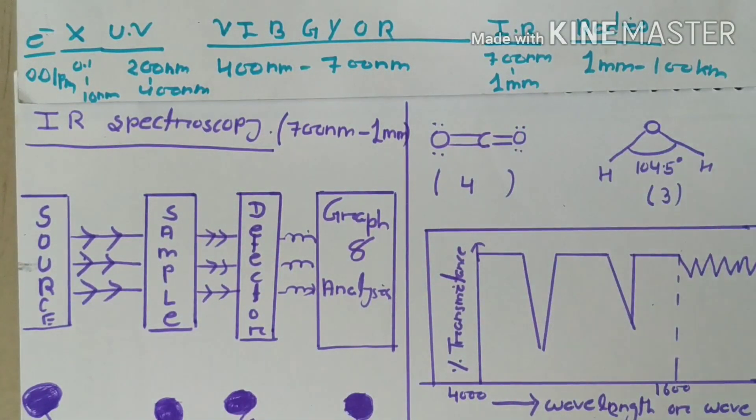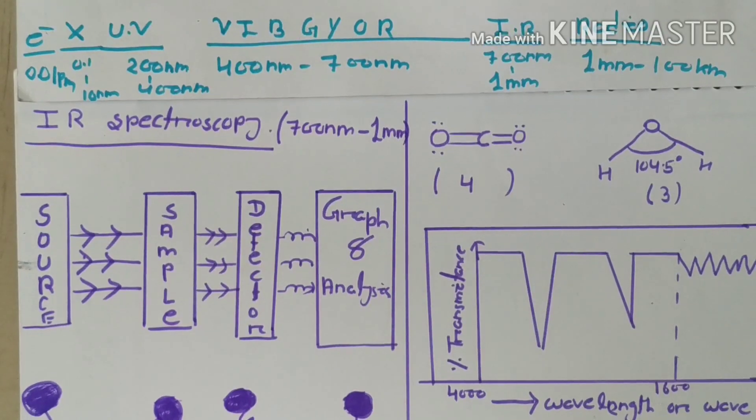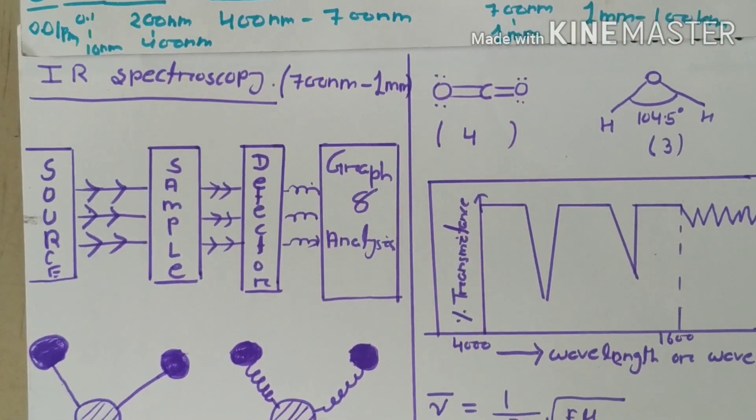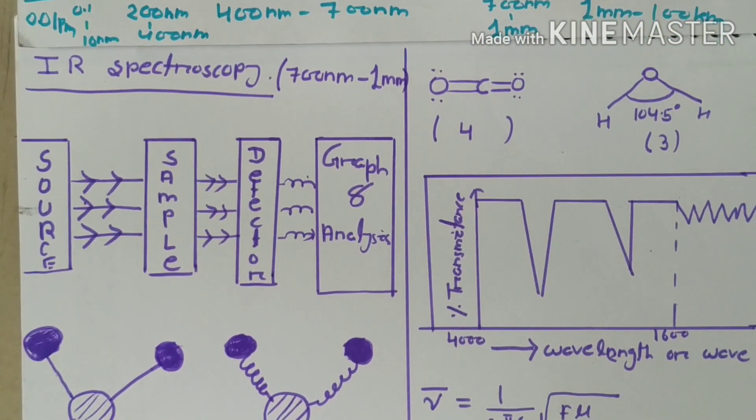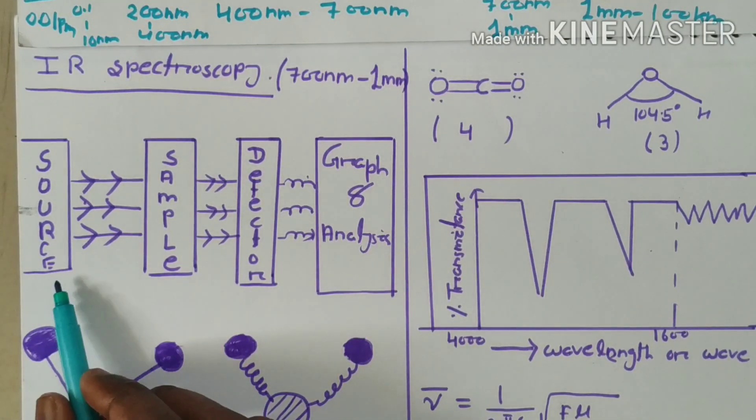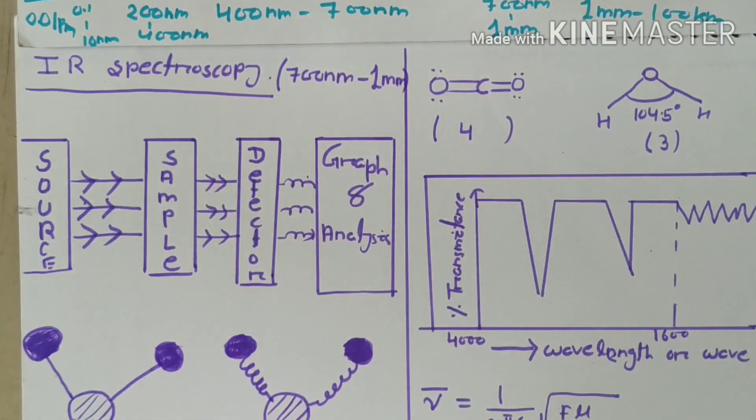As the wavelength of light increases, the energy decreases. This is the basic principle of IR spectroscopy. We have a source—some metals that are ideally heated to 1500 to 2200 Kelvin—that emits IR rays.